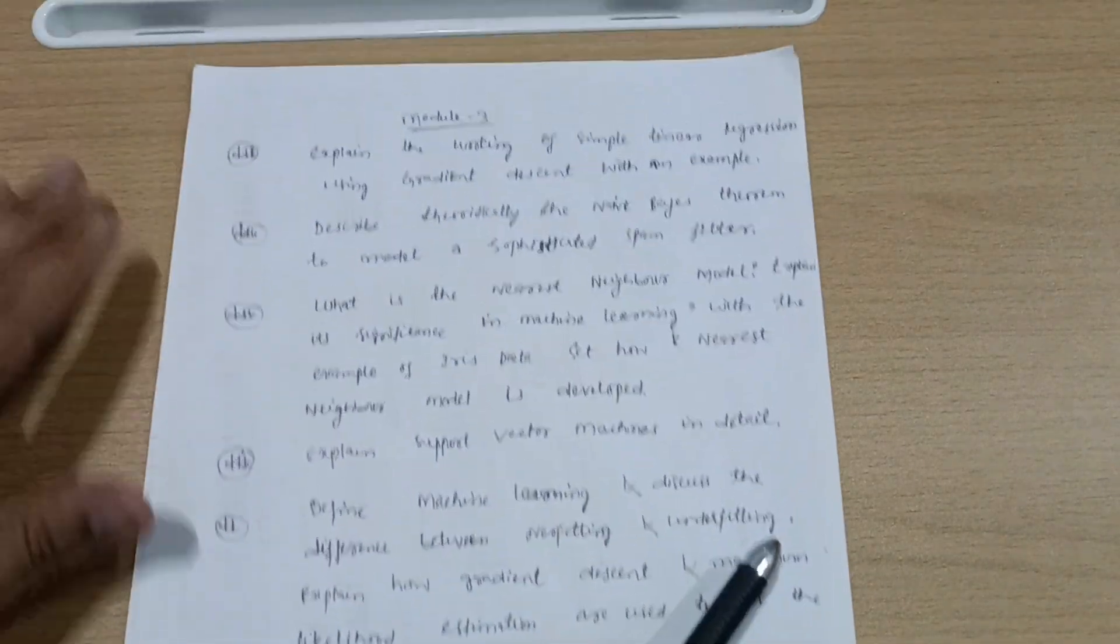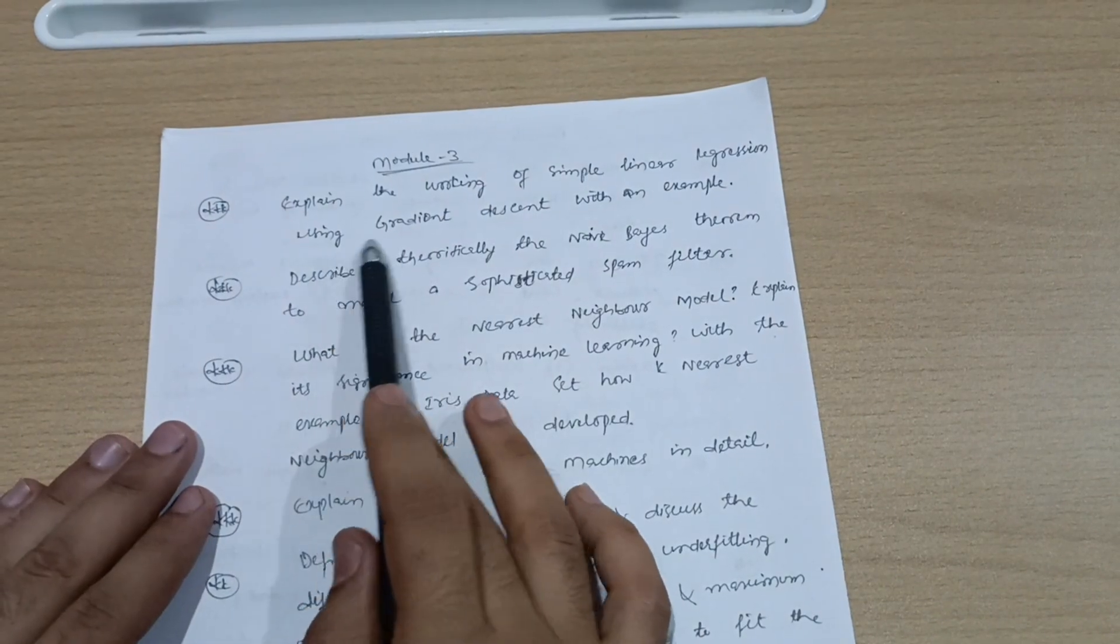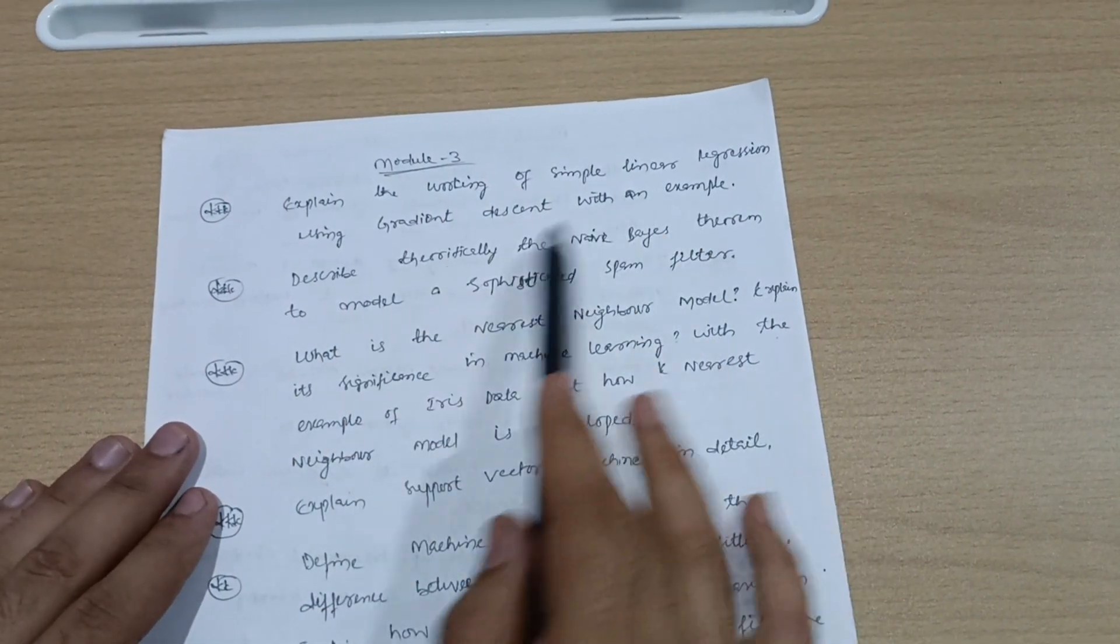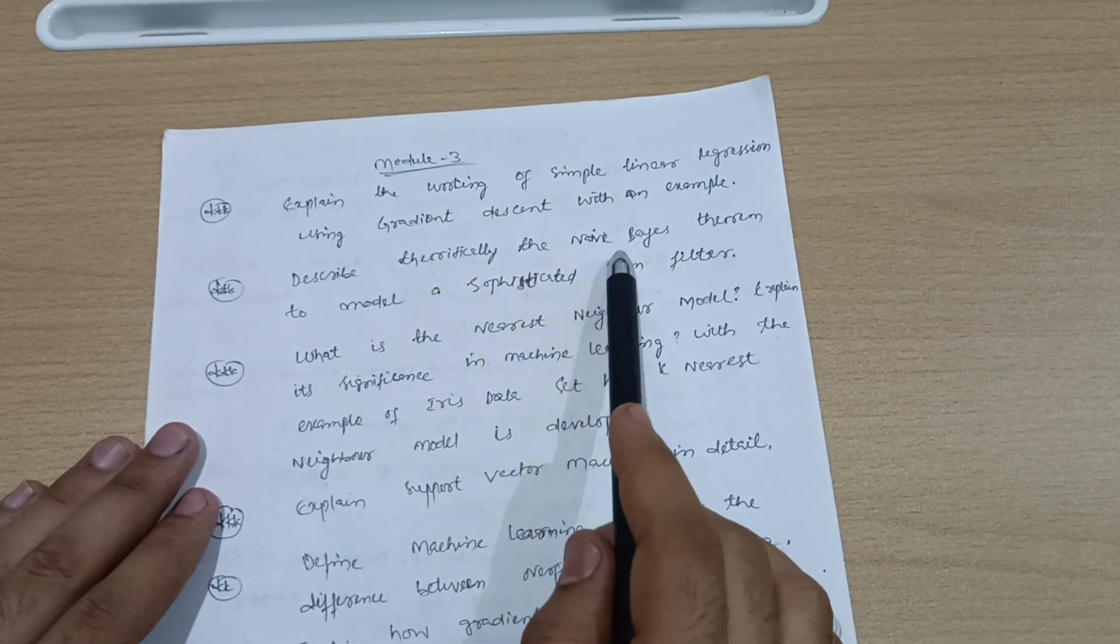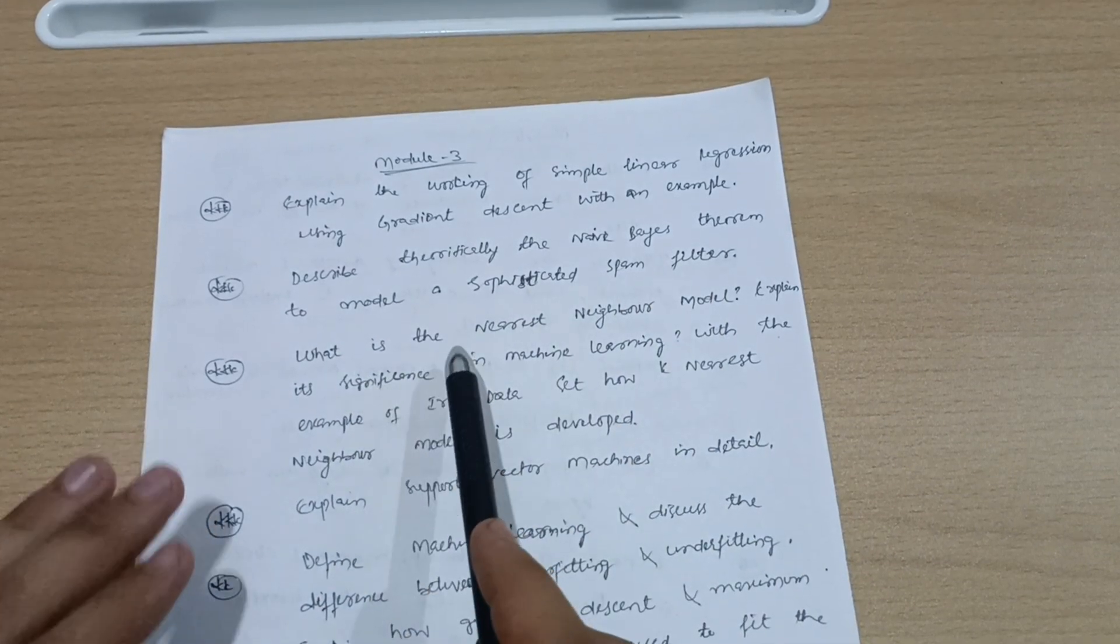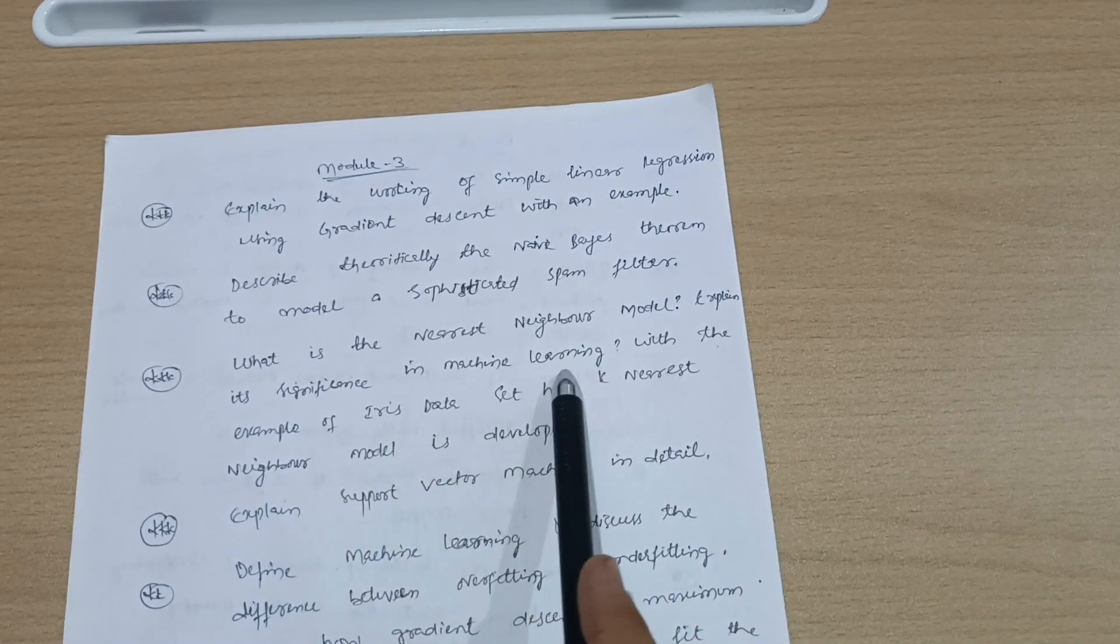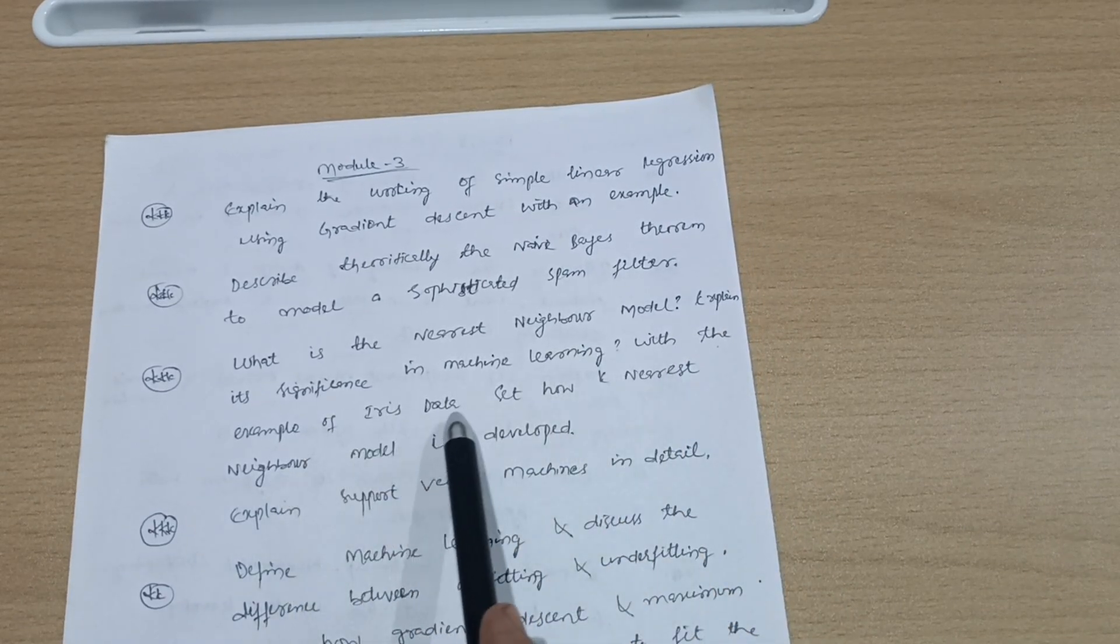Module 3: Explain the working of simple linear regression using gradient descent with an example. Describe theoretically the Naive Bayes theorem to model a sophisticated spam filter. What is the nearest neighbor model? Explain its significance in machine learning with the example of iris dataset.